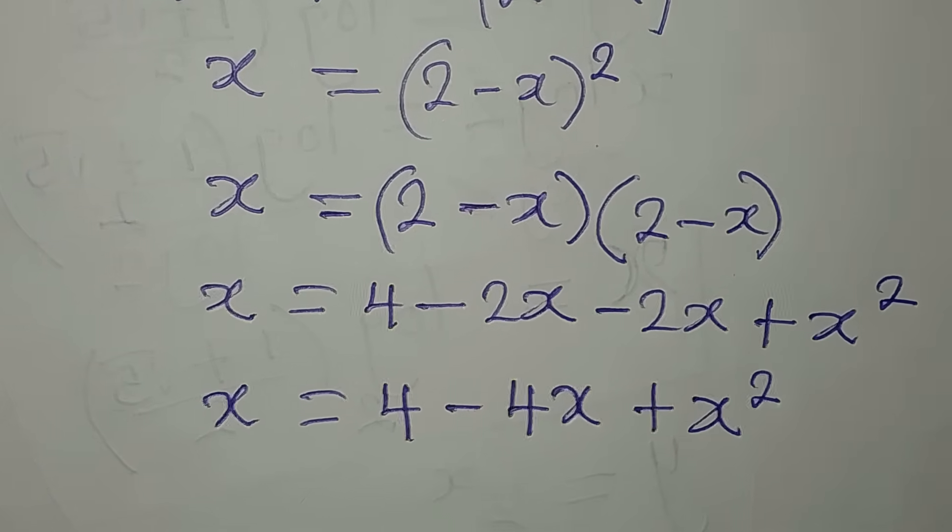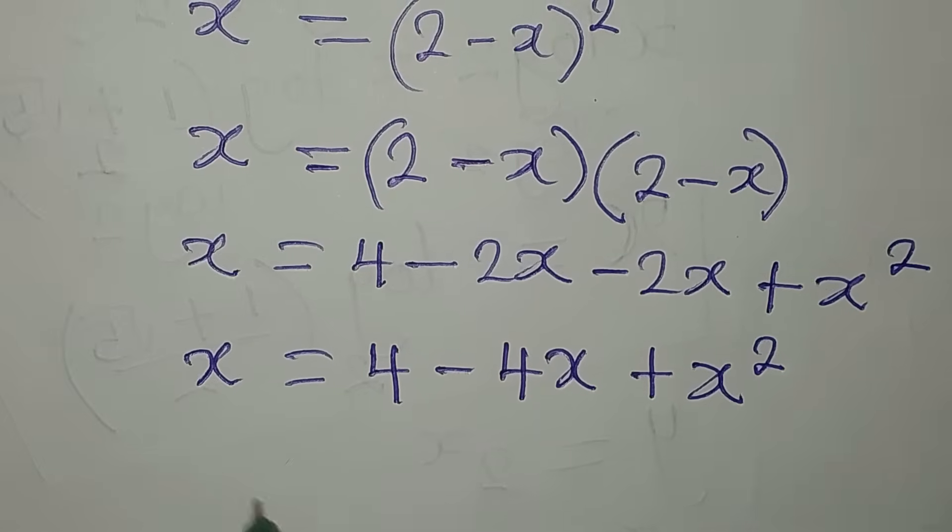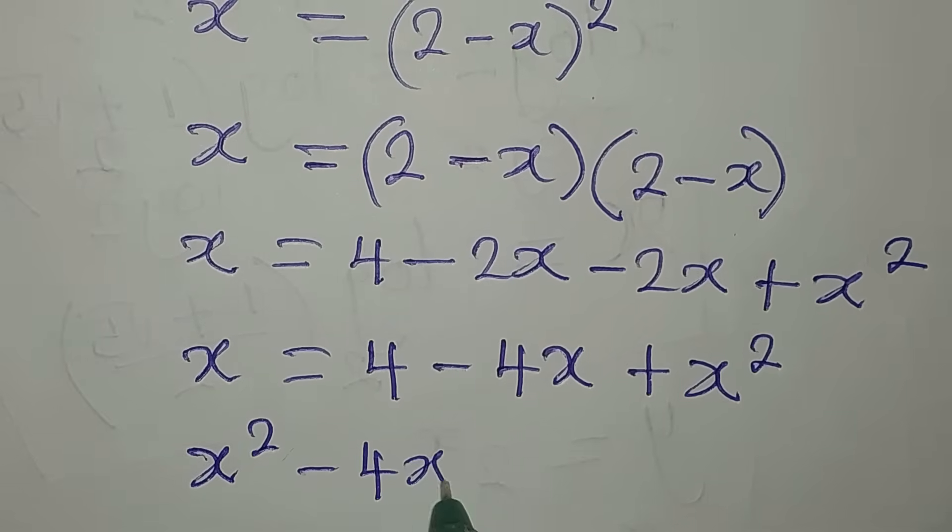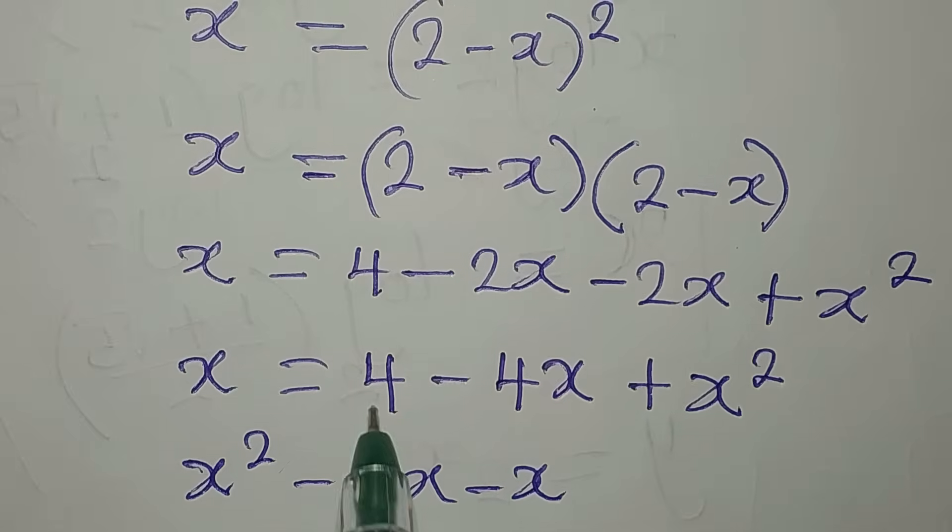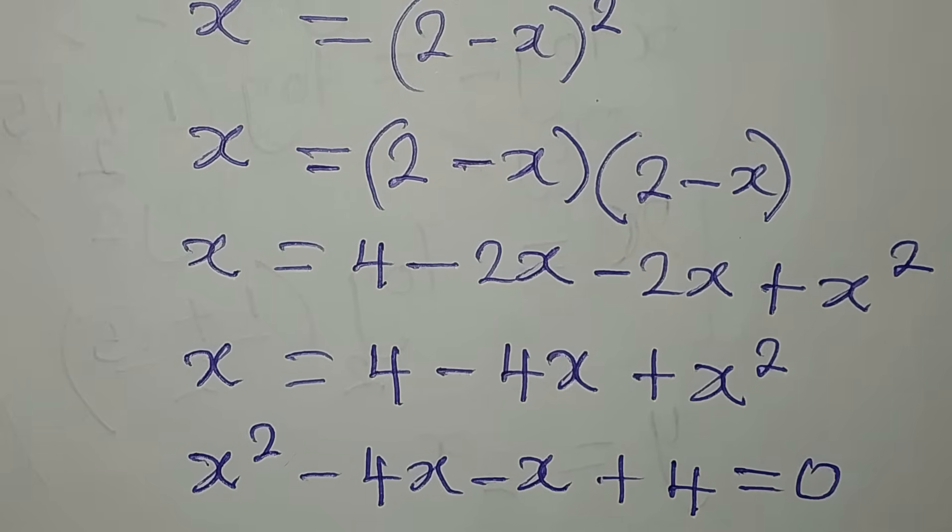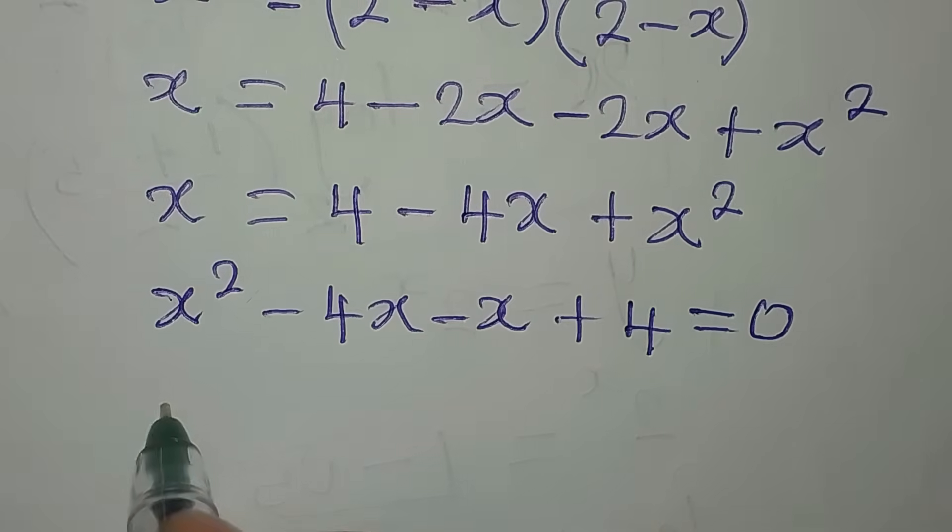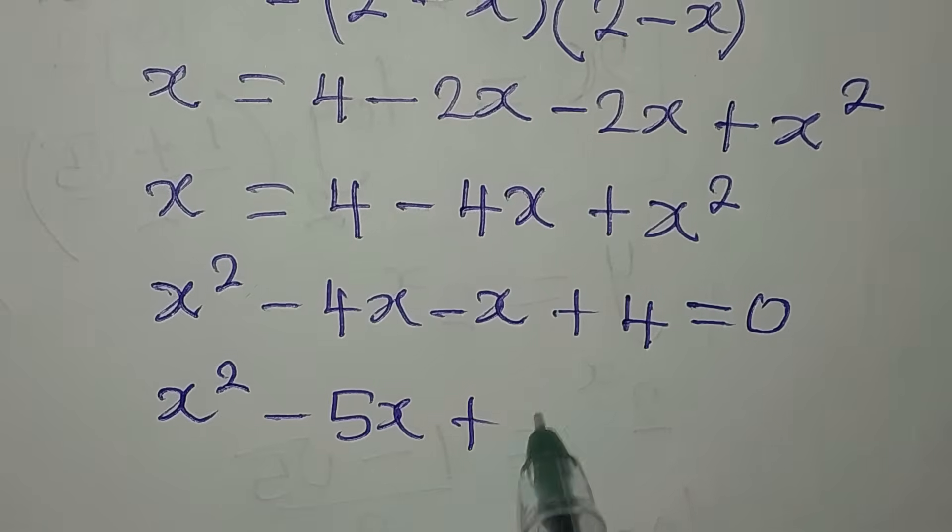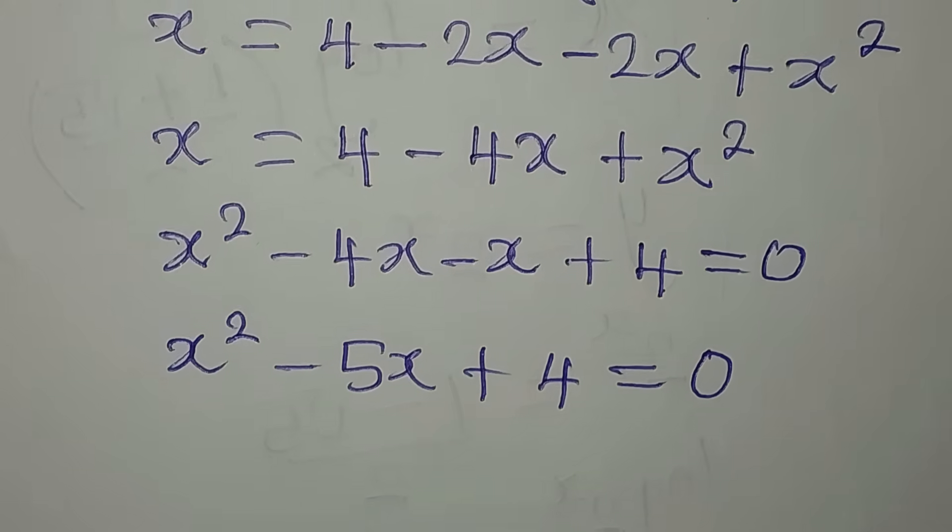I want to write x squared first. Minus 4x, if it goes to the other side, becomes negative x, and 4 here will come here which is positive 4. Now everything is zero because nothing is on the other side. x squared minus 5x plus 4 equals 0. This is now a quadratic equation, and I would love to solve this with the formula method.